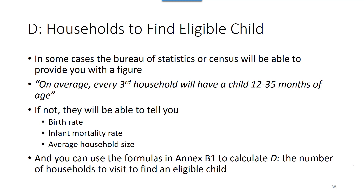In some cases you'll be able to get this figure from the Bureau of Statistics or the Census. They'll be able to tell you something like, on average every third household will have a child between the ages of 12 and 35 months.